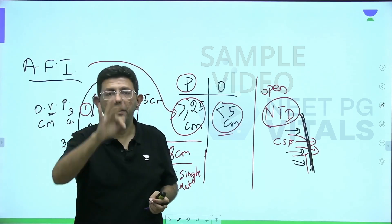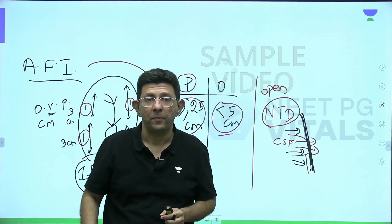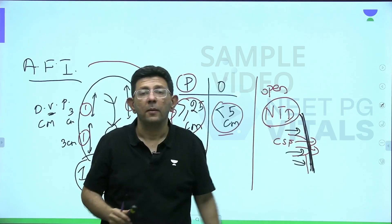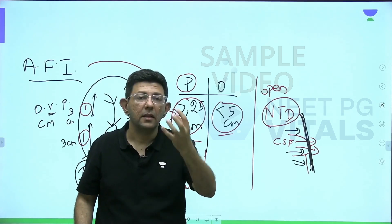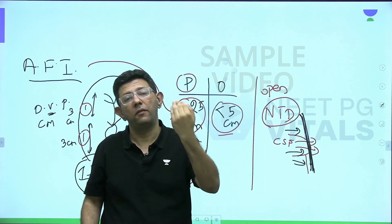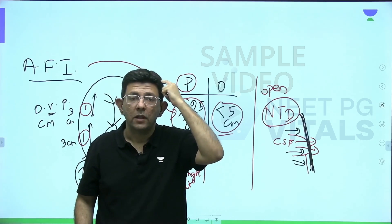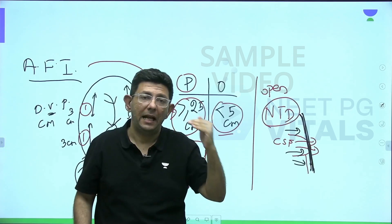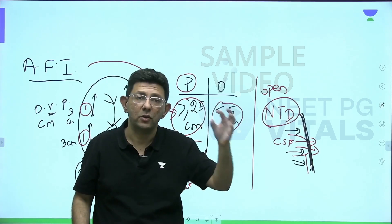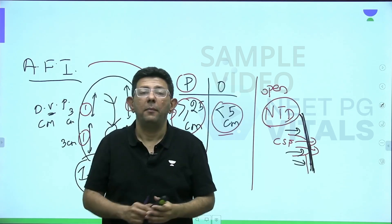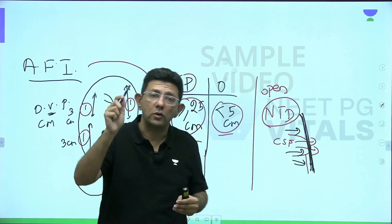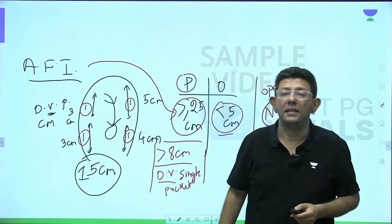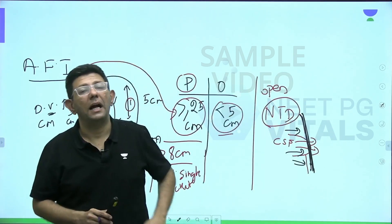In anencephaly there are three reasons for polyhydramnios: first, it is an open neural tube defect so more CSF enters; second, in anencephaly swallowing is defective so liquor accumulates; third, in anencephaly the pituitary gland is absent, so ADH (antidiuretic hormone) is absent. Absence of ADH means the baby will pass more urine, further increasing liquor volume.